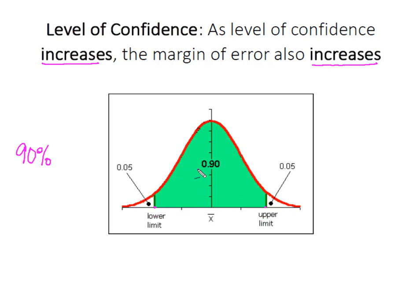So 90 percent of the time our actual population parameter value will fall between this lower and this upper limit, and at a 90 percent level of confidence we have this 10 percent falls outside of our interval, so I've got 5 percent of that data is going to fall above the upper limit and 5 percent is going to fall below the limit.